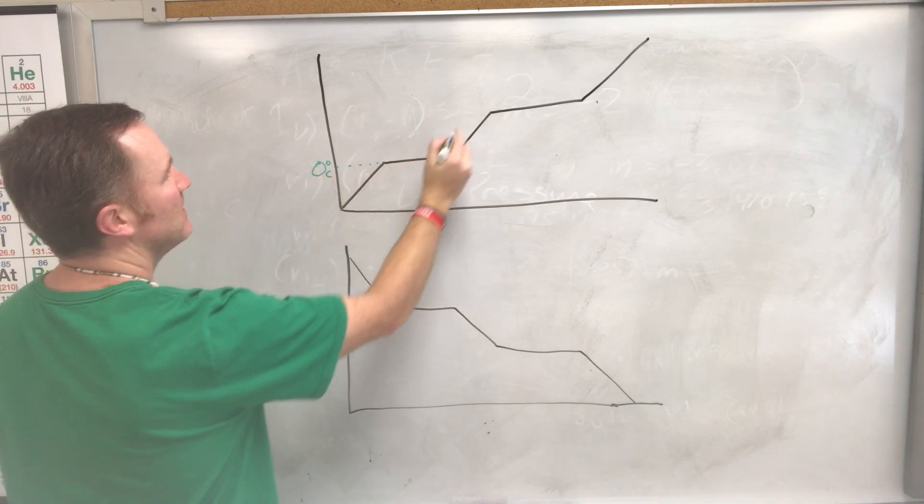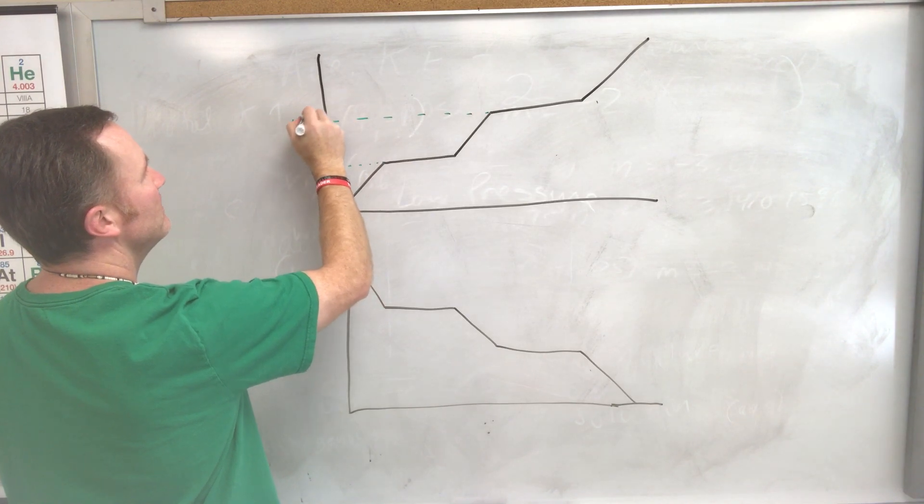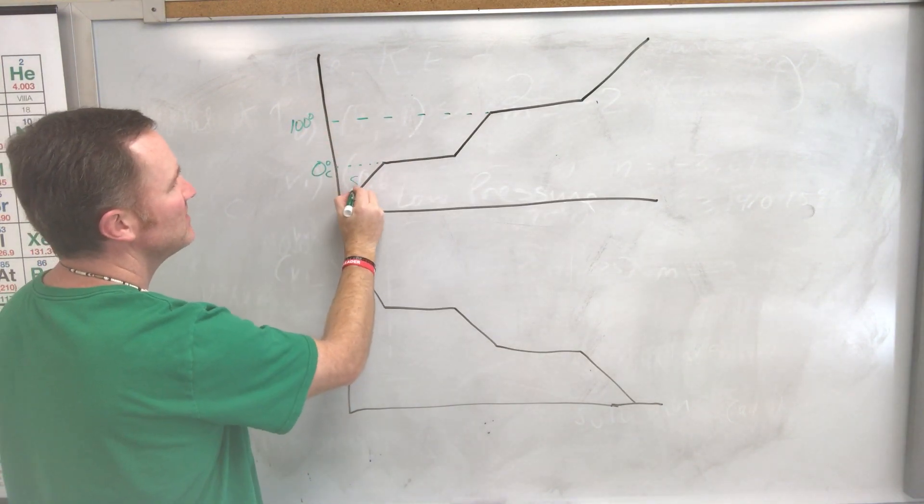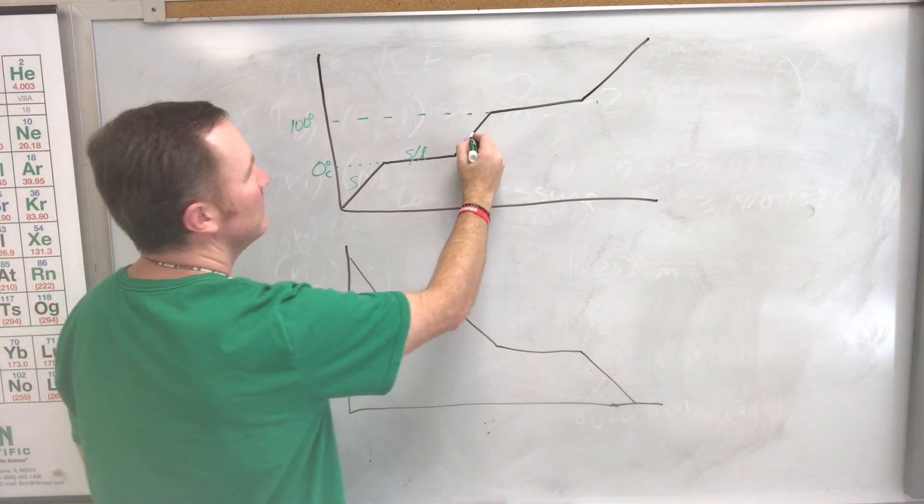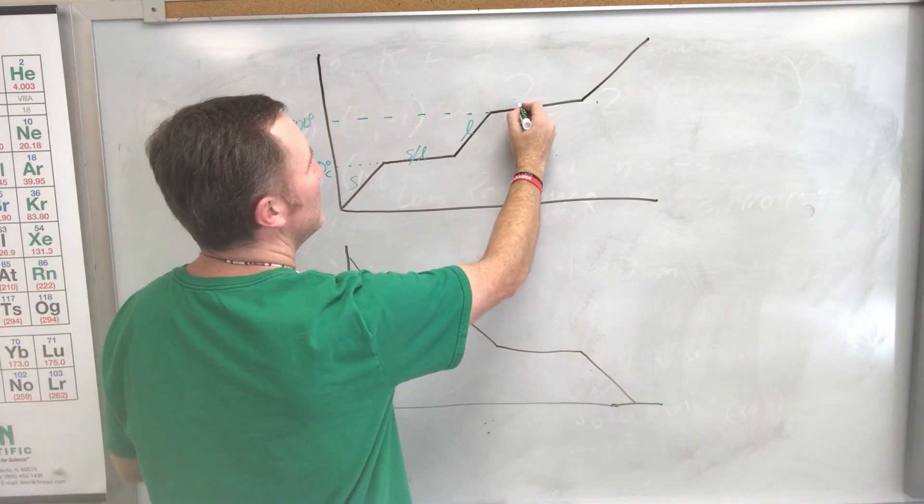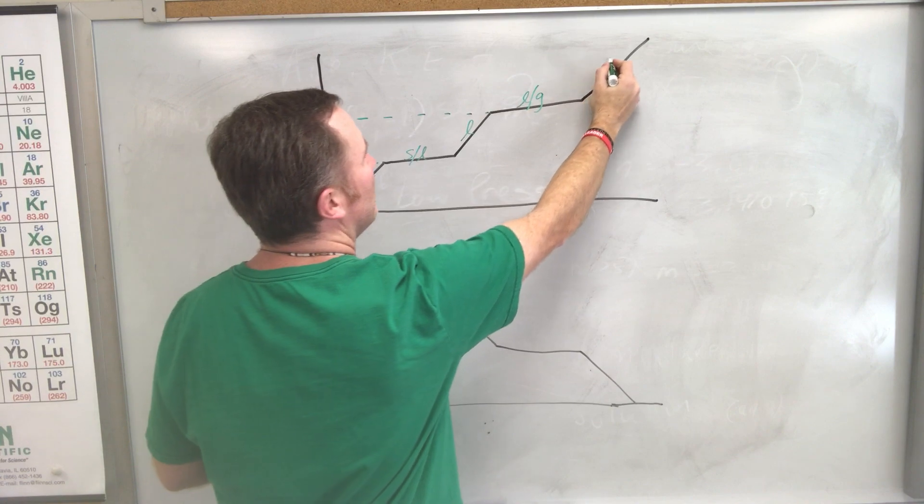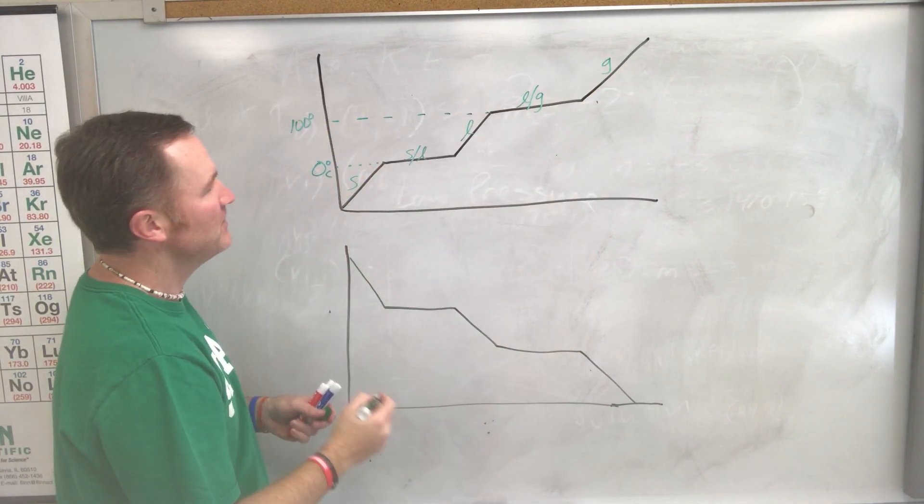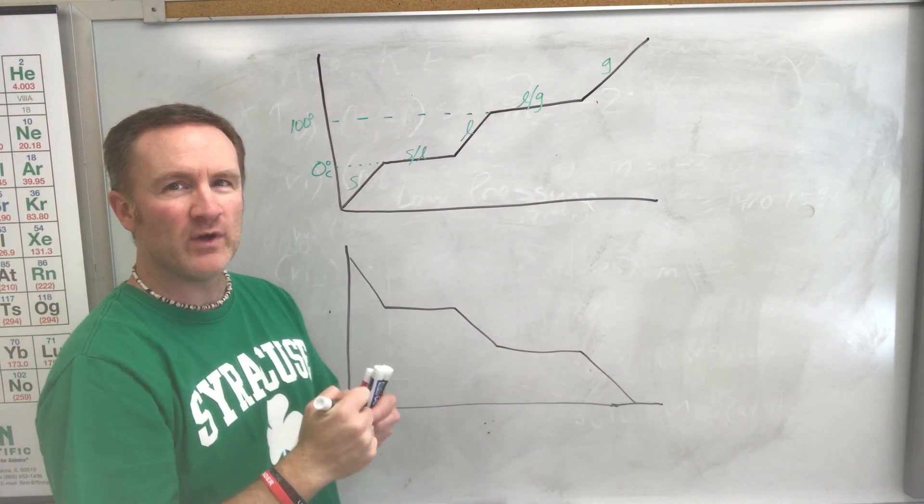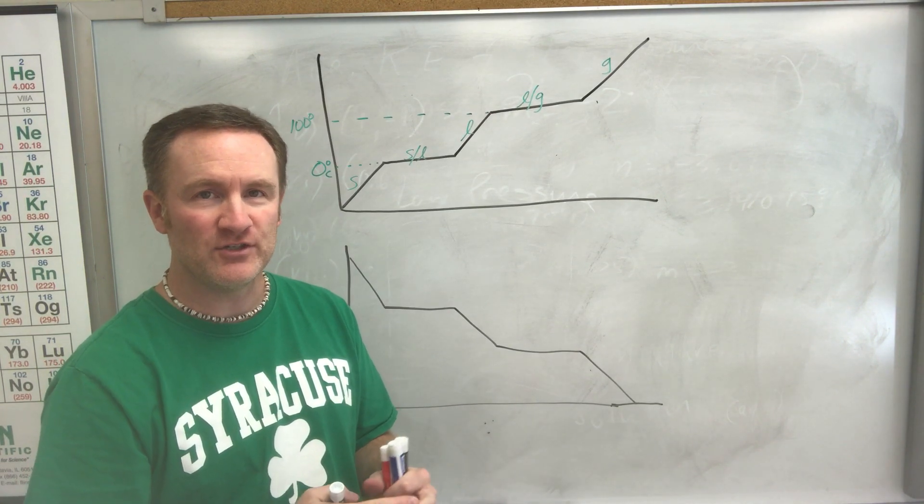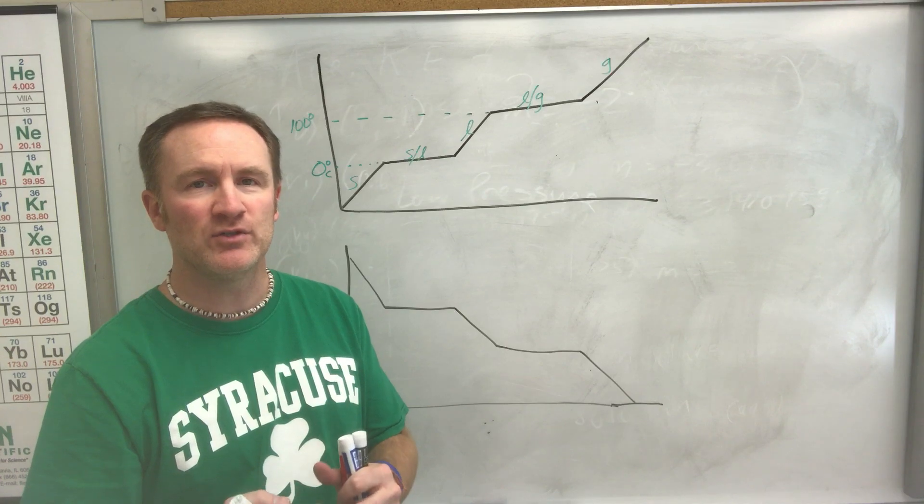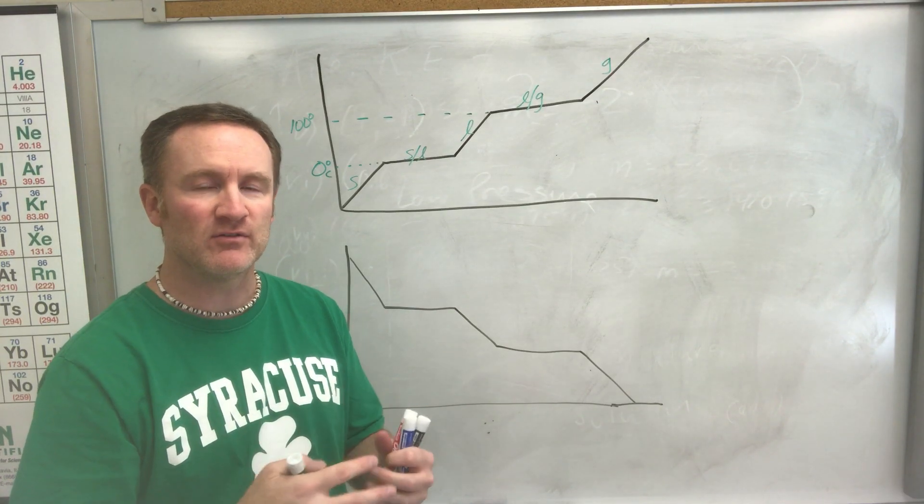This would be 100 degrees Celsius. So we have our solid phase, we have our solid and liquid phase, we have our liquid phase, we have our liquid and gas phase, and then finally just our gas phase. What we have to remember is what's going on with particle motion. As objects get warmer, we think about the correlation of increased motion of those atoms and the particles that are within them.